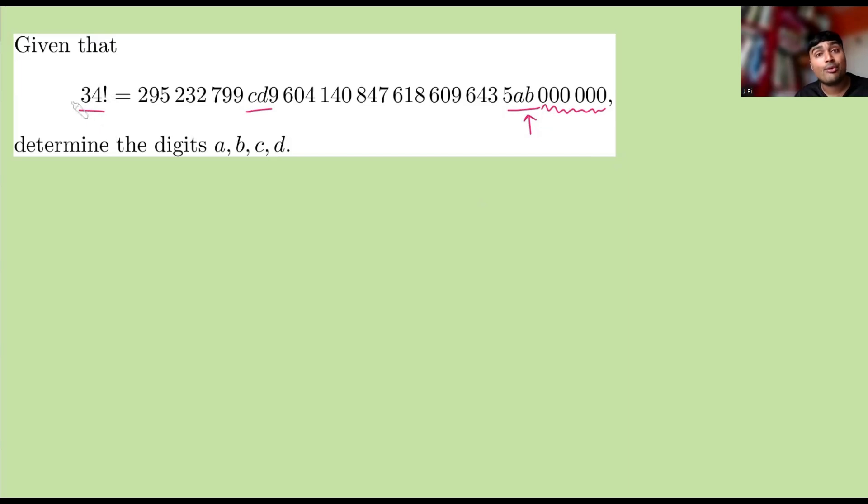Well, essentially, we're going to think about the prime factorization of 34 factorial. So remember, it is 34 times 33 times 32 times blah, blah, blah, all the way down to 3 times 2 times 1.